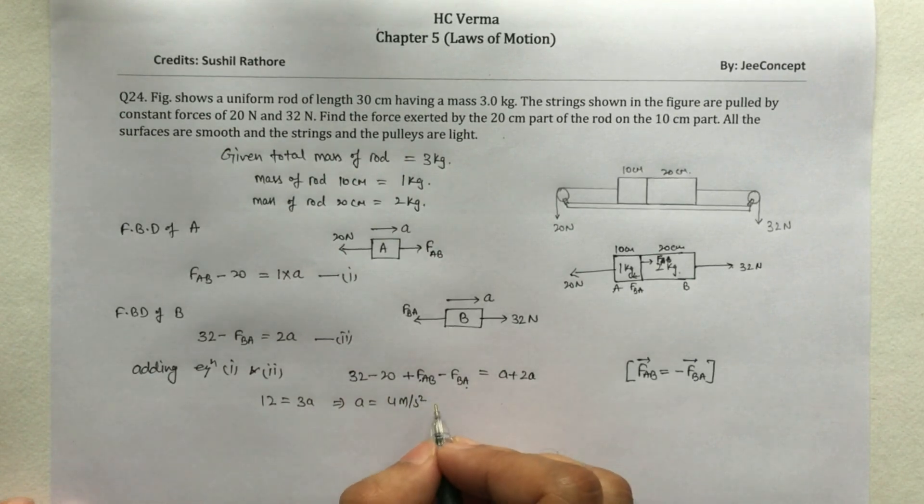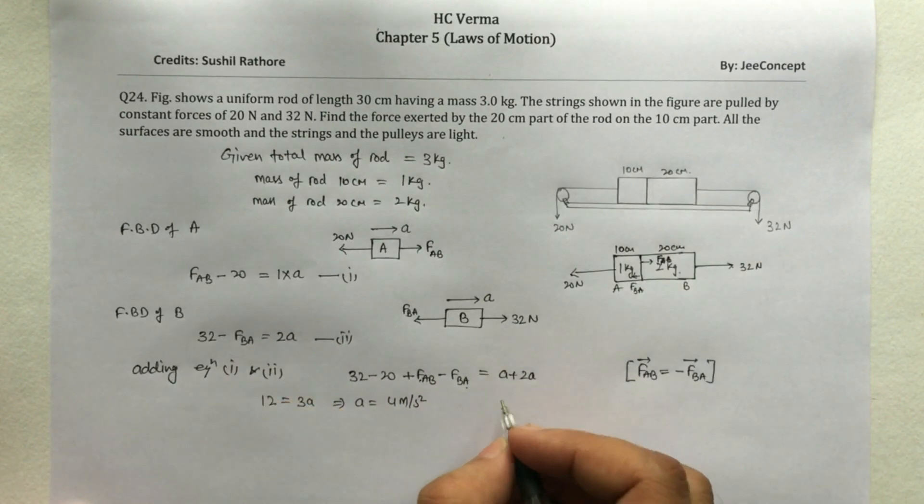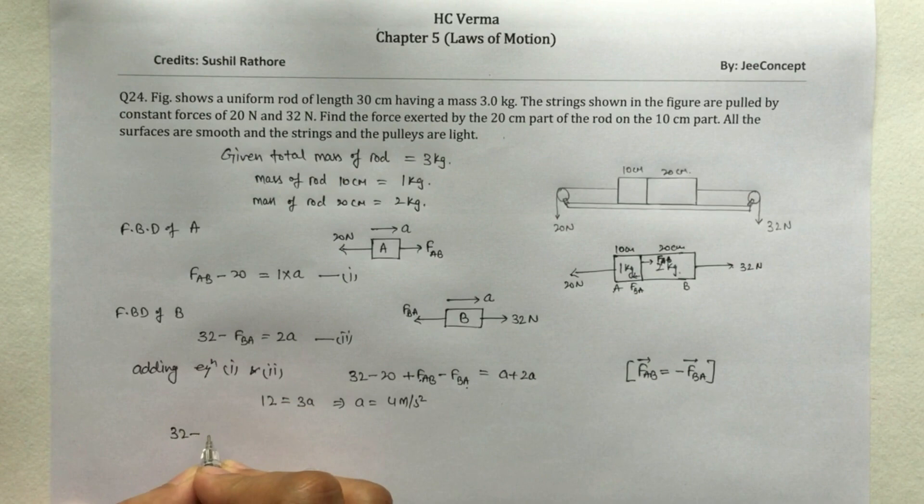Now to calculate force on B due to A, we will use this second equation where 32 minus FBA equals 2 times the acceleration is 4.